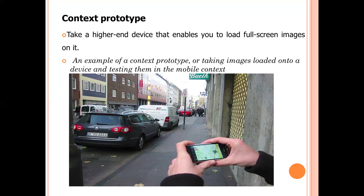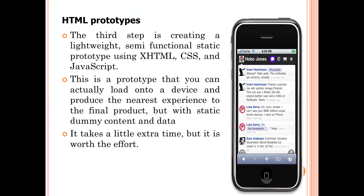A context prototype uses a higher-end device that enables you to load full screen images on it — taking images loaded onto a device and testing them in a mobile context. An HTML prototype is the third step, creating a lightweight semi-functional static prototype using HTML, CSS and JavaScript. This prototype can actually be loaded on a device and provides the nearest experience to the final product, but with static dummy content and data. It takes a little extra time but is worth the effort.